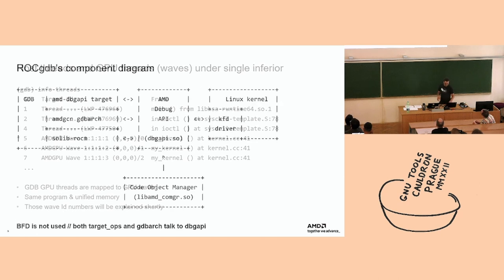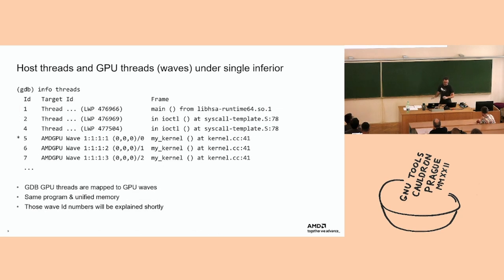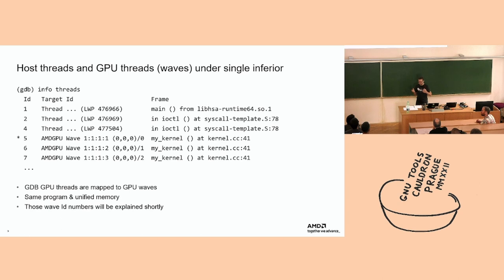This GPU debugging happens in parallel with GDB having the Linux native target loaded and talking to the Linux kernel via ptrace to debug host threads. When you're debugging a program, you debug both the GPU and the Linux host threads simultaneously.